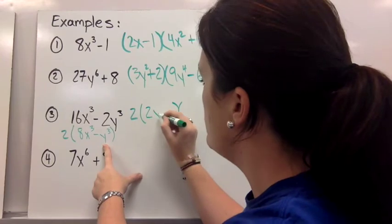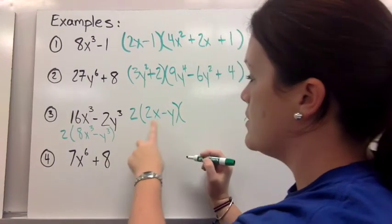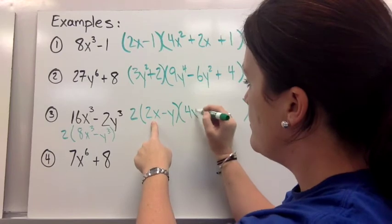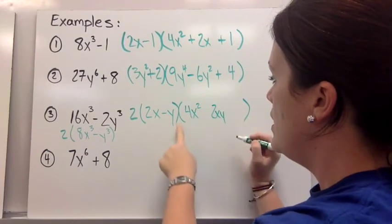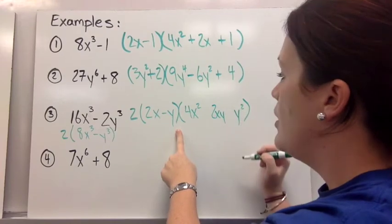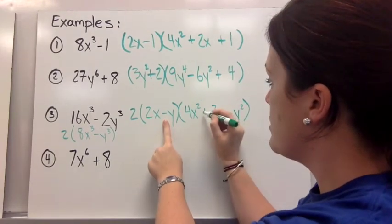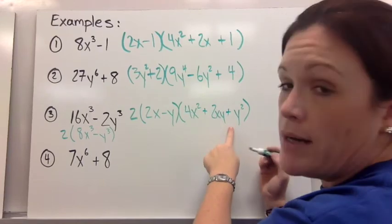But then you're going to factor the binomial and the trinomial. So the factors of 8x cubed minus y cubed would be 2x minus y, because those are their cube roots. Square the first term, multiply them together in the middle, and square the last term. Put in your sign. So minus, plus, plus, or same, opposite, always positive.